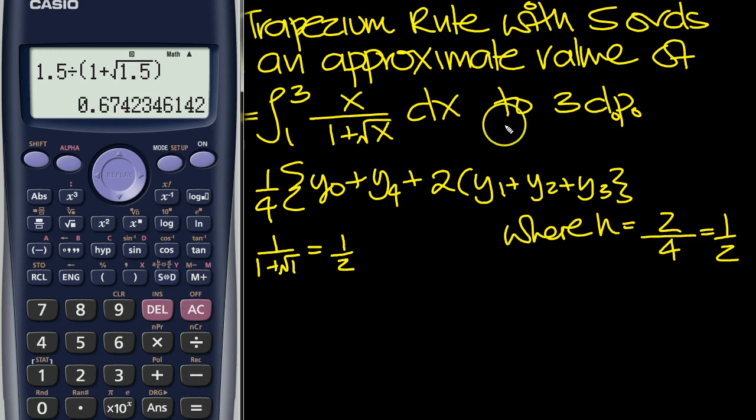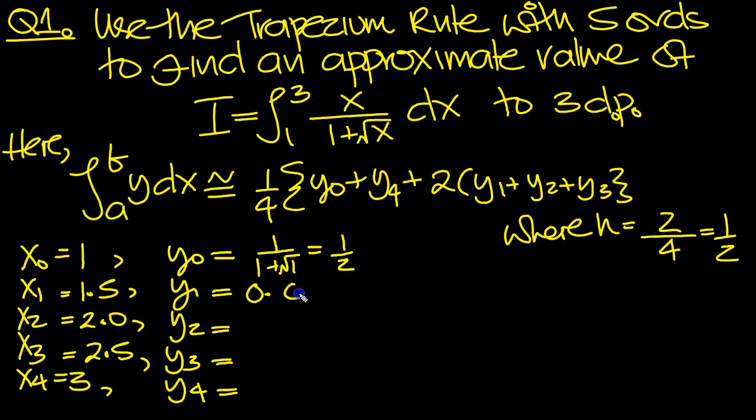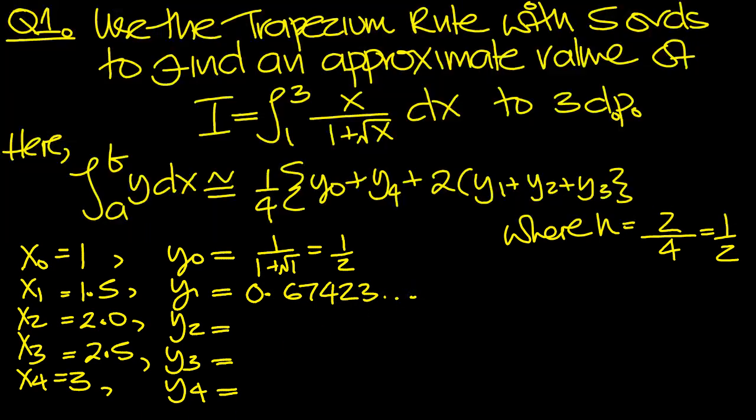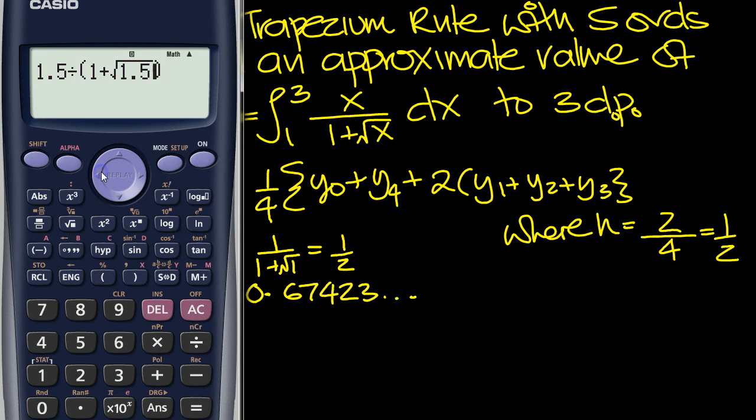So because the answer's to 3 decimal places, we can write this down to 5. 0.674236. And then my 2. So let's get that. So instead of 1.5, we now put in 2. Here and the other x value. Here. 2. And we get 0.82842.